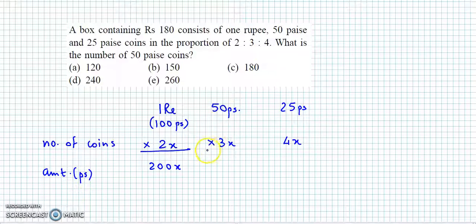hume amount milega that will be 50 into 3x to ye ho jayega 150x paise. And 25 into 4x so it will be 100x paise. And box